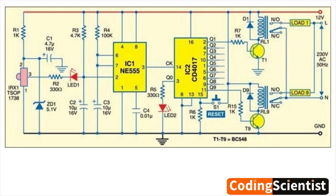An IR receiver, IR-X1, is connected to the microcontroller, IC1. When the IR receiver detects an infrared signal from a remote control, it sends a signal to the microcontroller.